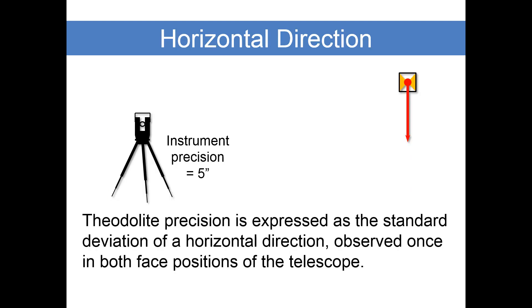The standard says theodolite precision is expressed as a standard deviation of a horizontal direction observed once in both face positions of the telescope. A direction is merely one pointing at one target. You point it at a target in direct mode or face one, and then do it again in reverse mode or face two.